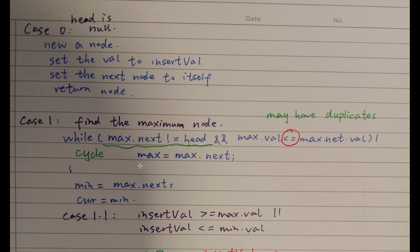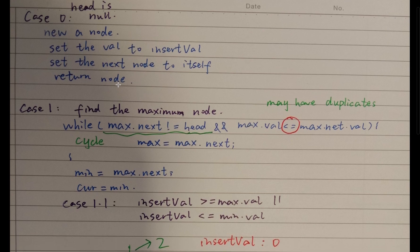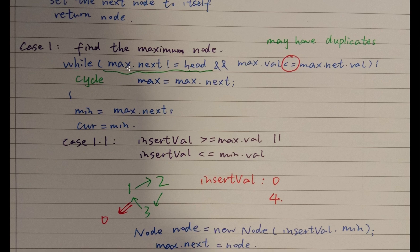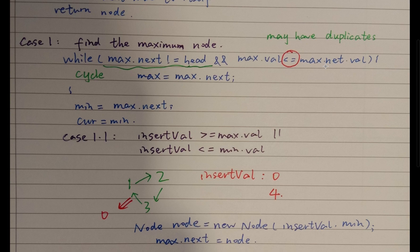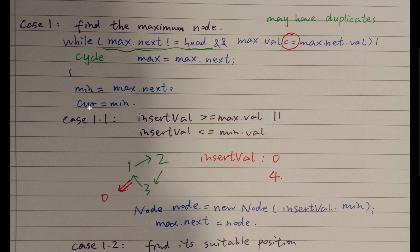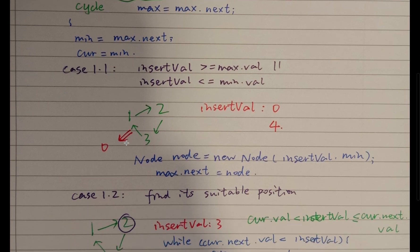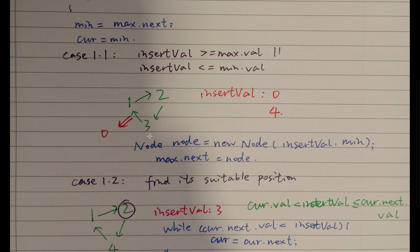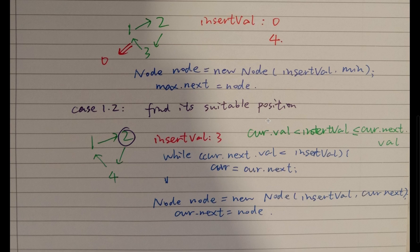To summarize the algorithm: first check whether the head is null — if so, create a new node. Otherwise, find the maximum node by advancing while max.next != head and max.val <= max.next.val. The minimum node will be max.next. There are two cases: if insertVal >= max.val or insertVal <= min.val, insert between the max and min nodes. Otherwise, iterate from the minimum node to find the suitable position.